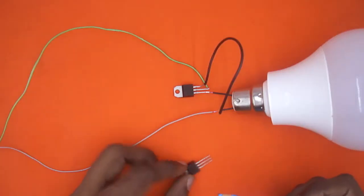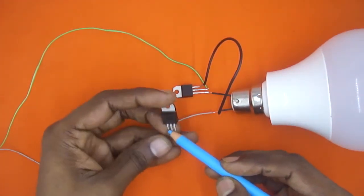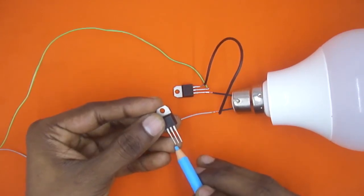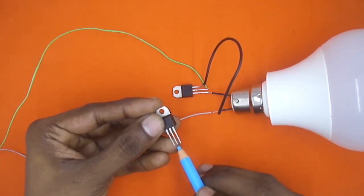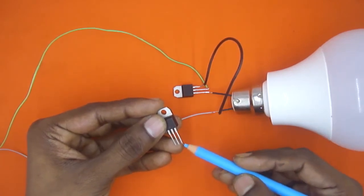So here I have one small TRIAC with three pins. Out of these three pins, first pin is called T1, terminal 1, second pin is called T2, terminal 2, and third pin is called gate.